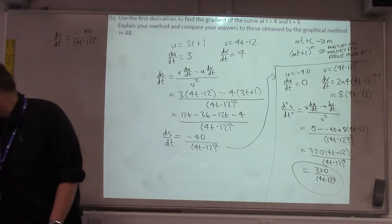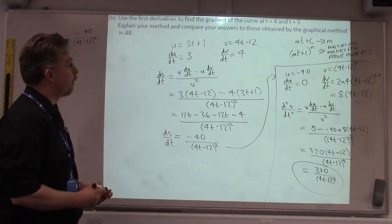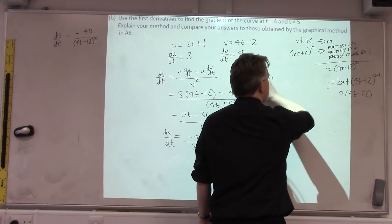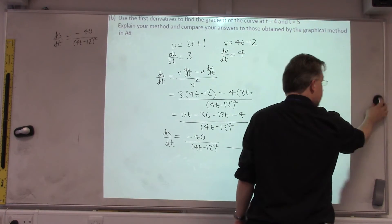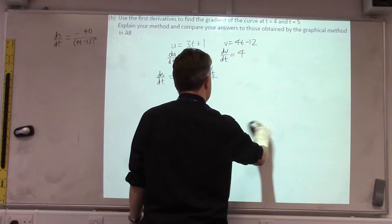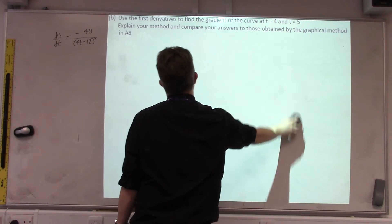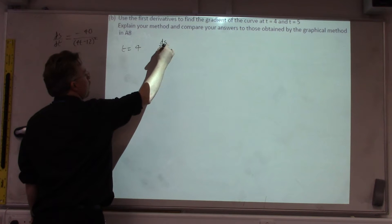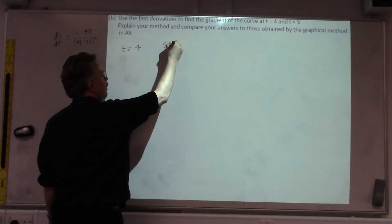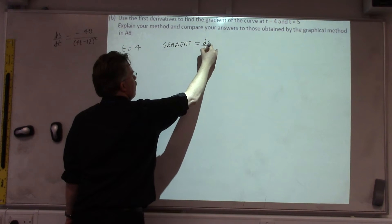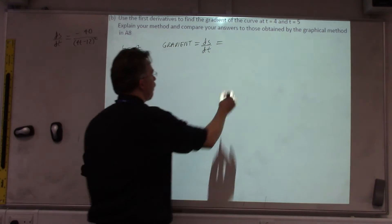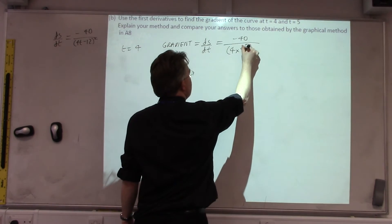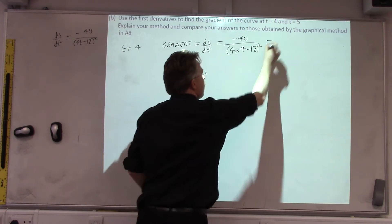Right, moving on to part B. We need to find the gradients of the points T equals 4 and T equals 5. So, we'll need our dS by the T formula. So, T equals 4, the gradient. So, dS by the T is minus 40 divided by, open bracket, 4 times T. So, the T in this case is 4, minus 12, close bracket, squared.